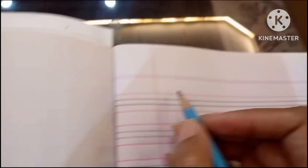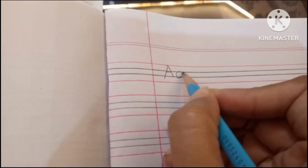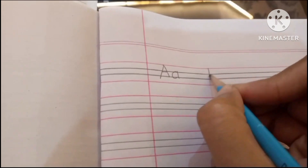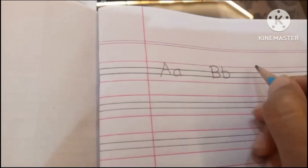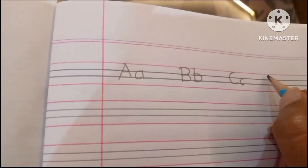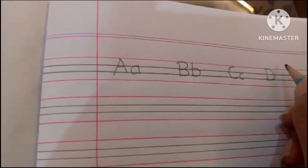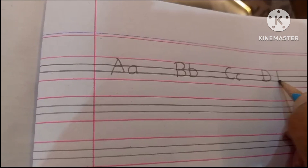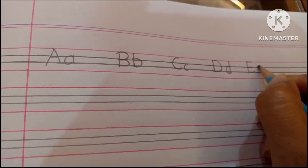Hi everyone, today we are going to write the capital and small ABC. Capital A, small a, capital B, small b, capital C, small c, capital D, small d, capital E, small e.